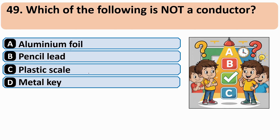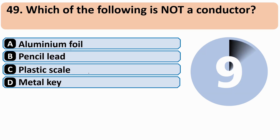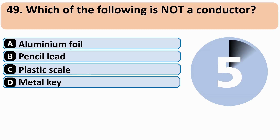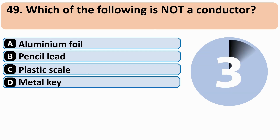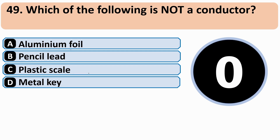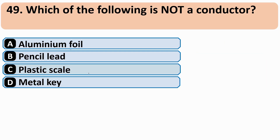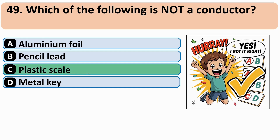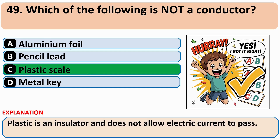Which of the following is not a conductor? The correct answer is C: Plastic scale.